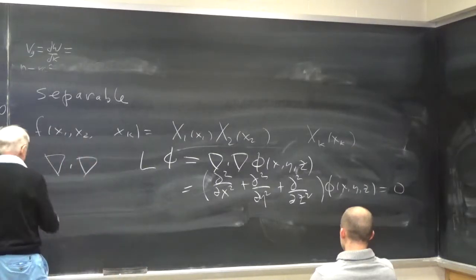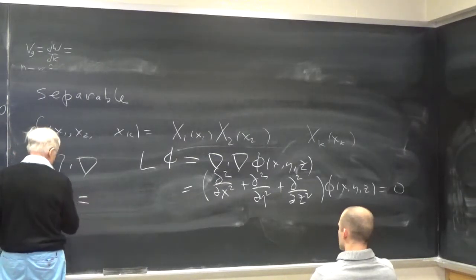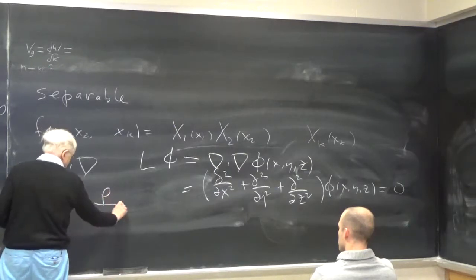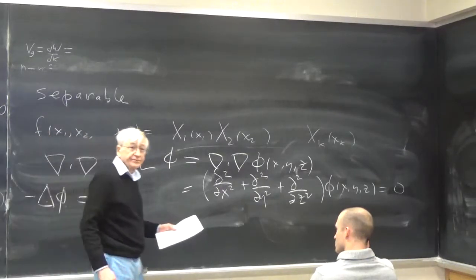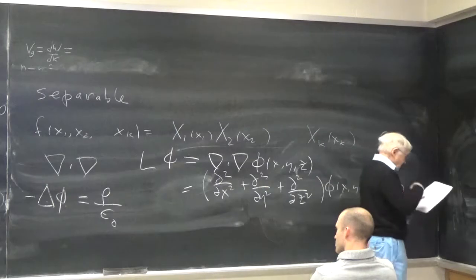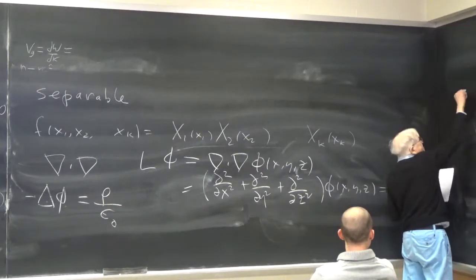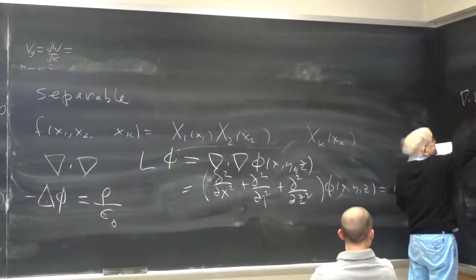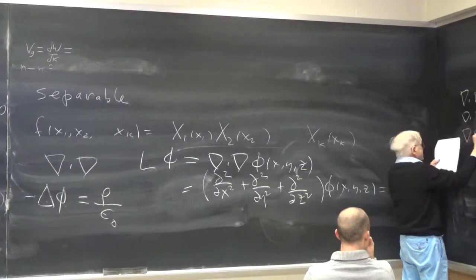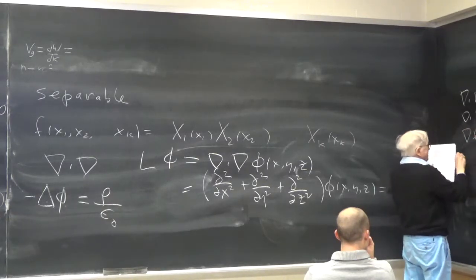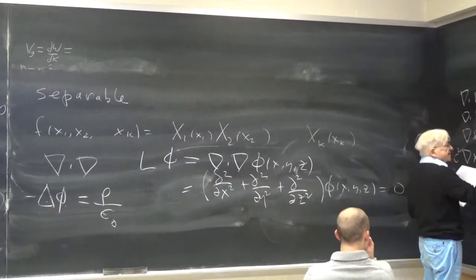This is an equation you know from electrodynamics because it is Poisson's equation: minus ε₀ times the Laplacian of φ equals the charge density. Another example of separable equations is Maxwell's equations in empty space: ∇·E equals zero, ∇·B equals zero, curl E equals minus Ḃ, and curl B times c² equals Ė.